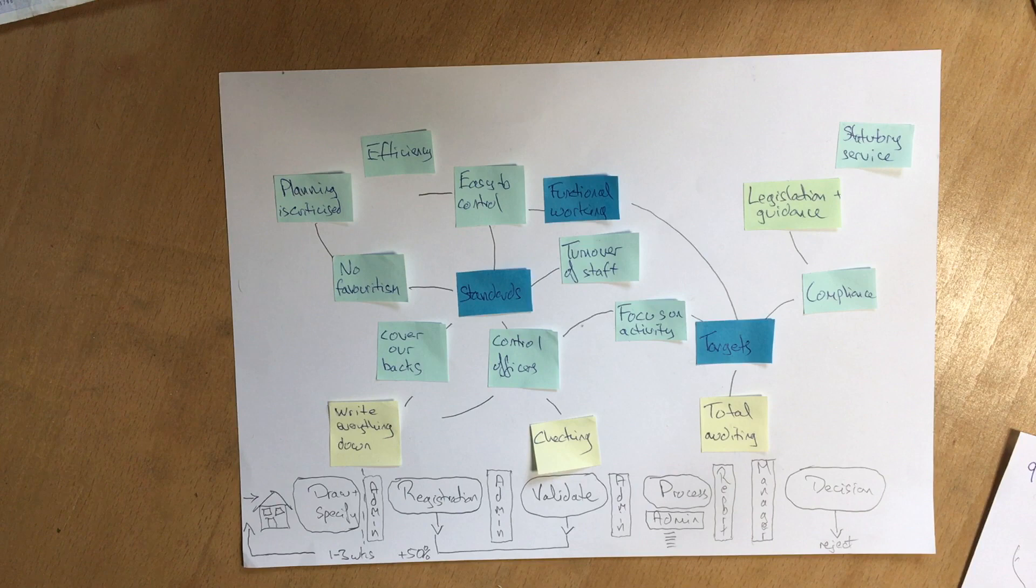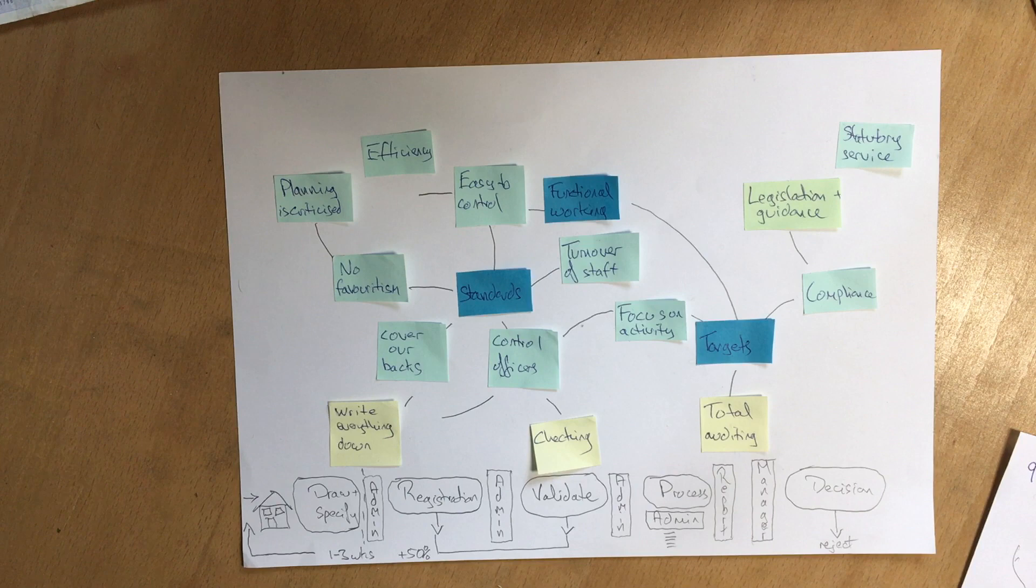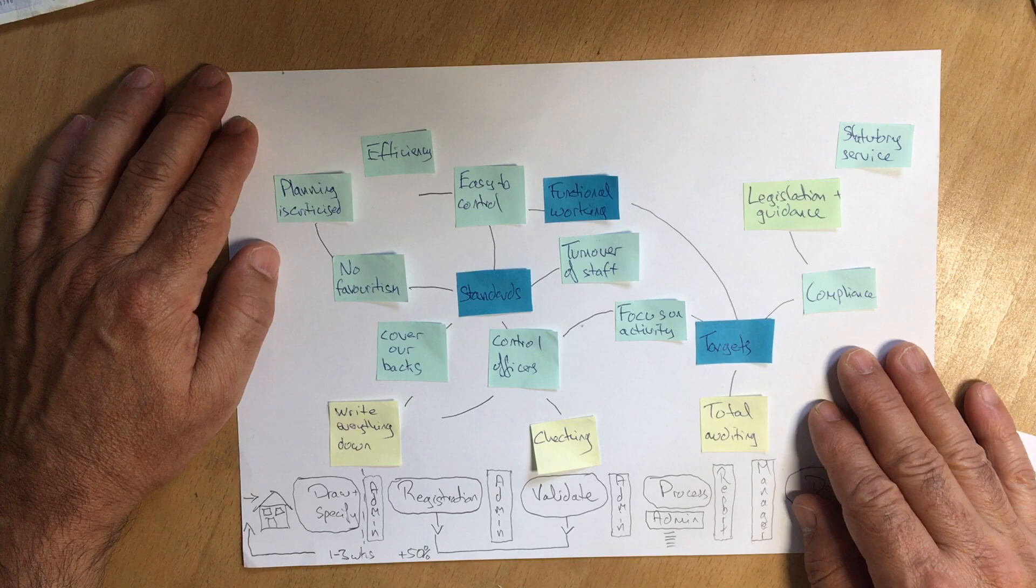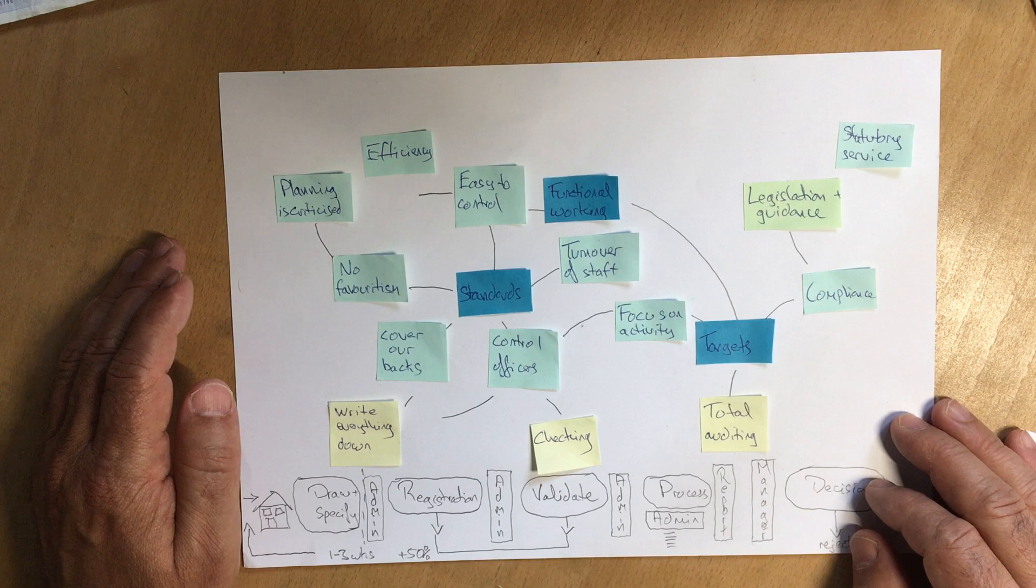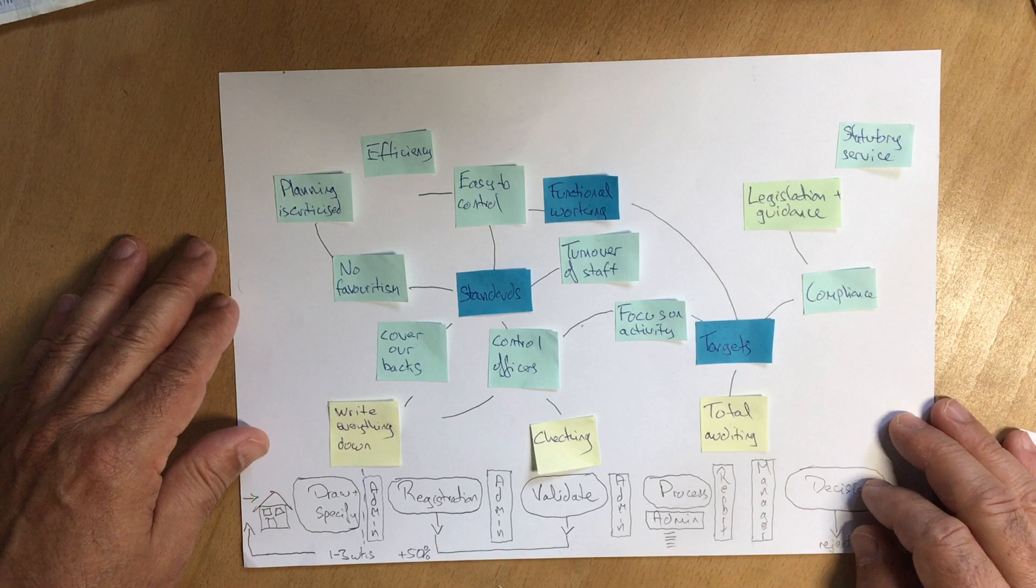And as you go further up the page, you see that you go deeper into the system design and you go deeper into the manager's attitude and the manager's beliefs. And at the end of this, what we ended up doing was coming up with some of the key aspects of the way that the managers thought about the work and how they thought it should be designed. So what were those key thoughts? Well, the first one was digital is always good.